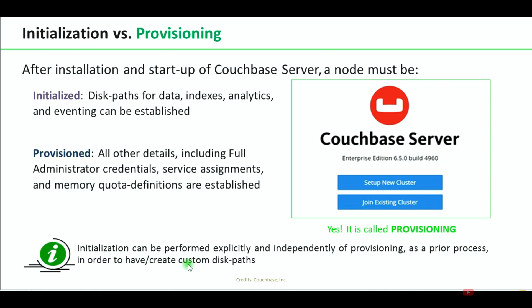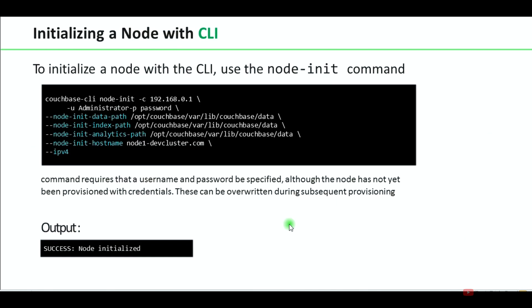Initialization can be performed explicitly and independently of provisioning as a prior process, in order to create a custom disk path. Here is the command to initialize a node with the CLI — you need to provide the data path, index path, and analytics path, along with cluster admin credentials. This is the expected message after successful initialization of the node.